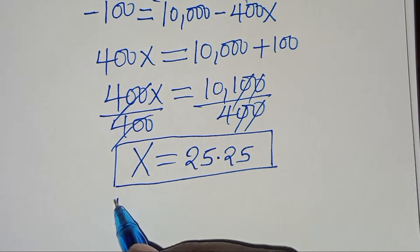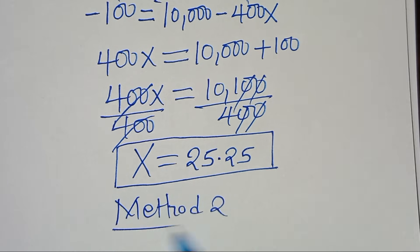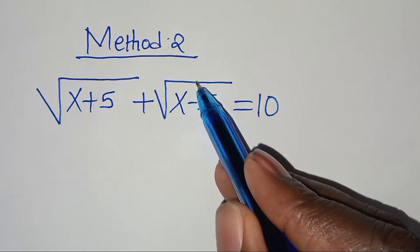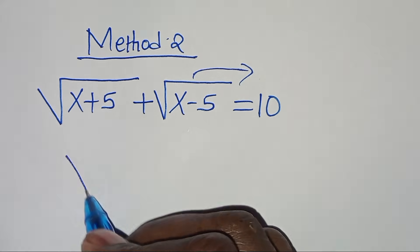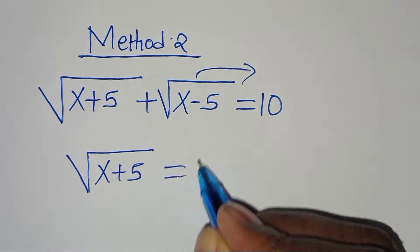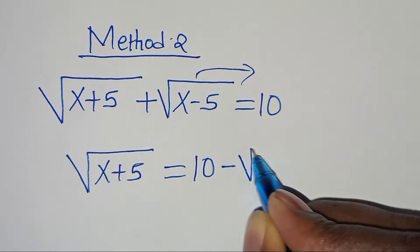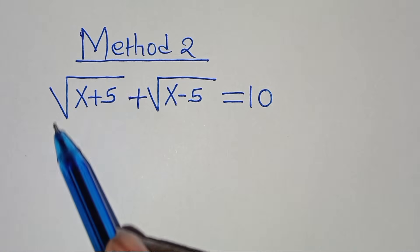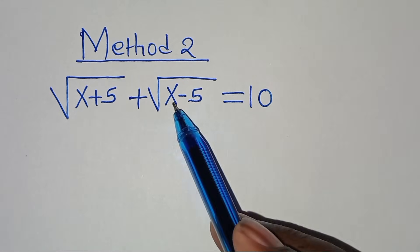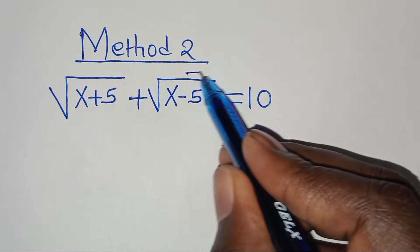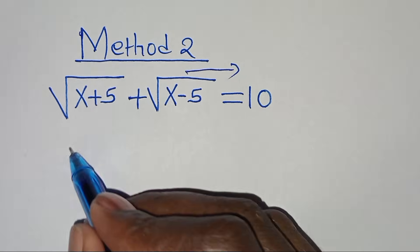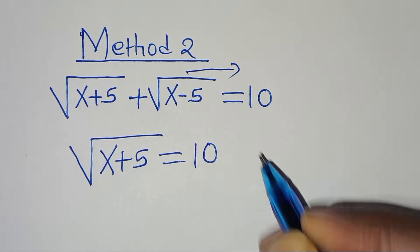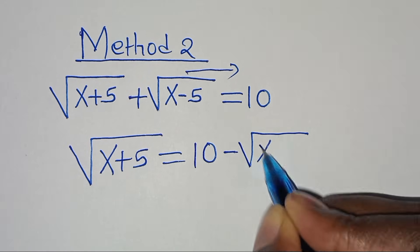Now let's proceed to Method 2. By applying Method 2, let's take the square root of (x−5) to the right-hand side, so that we have the square root of (x+5) equals 10 minus the square root of (x−5).